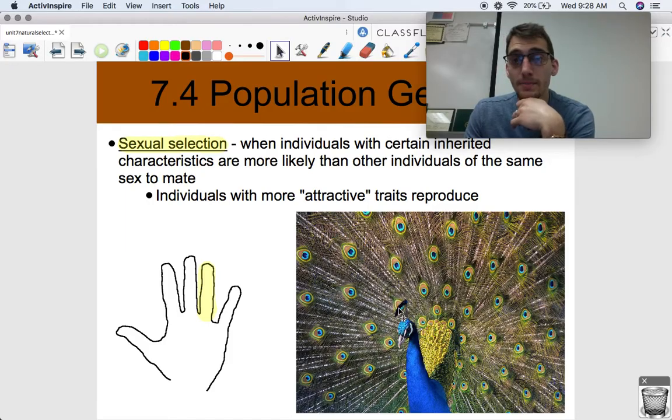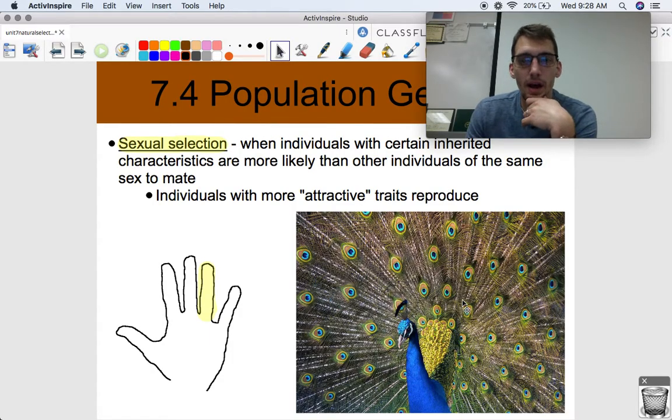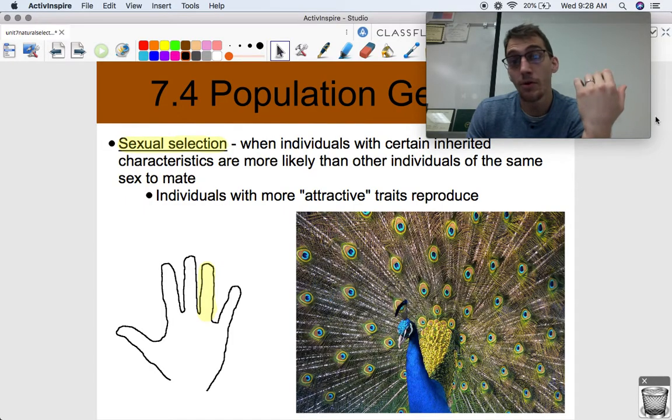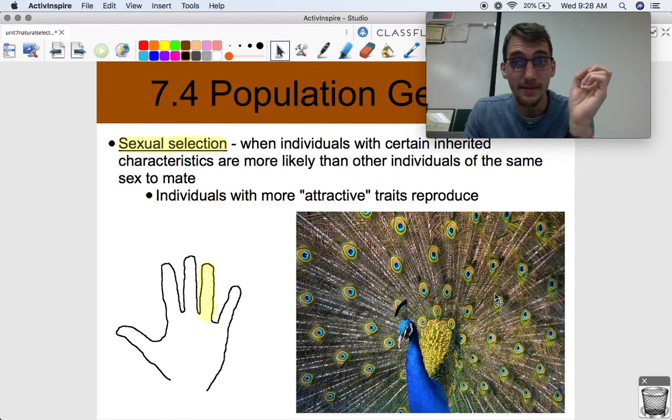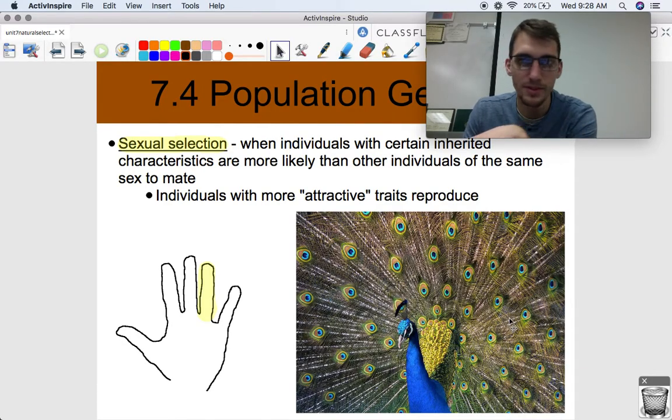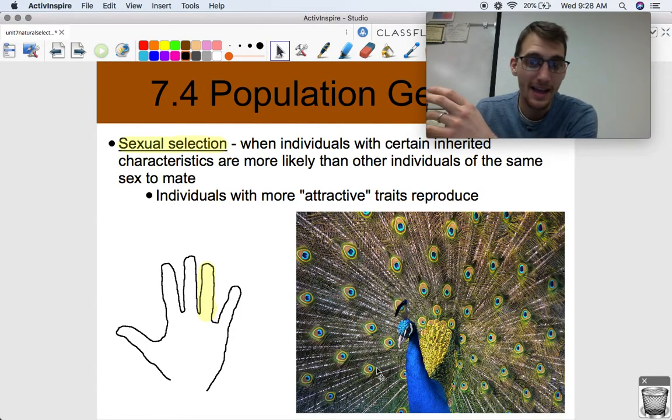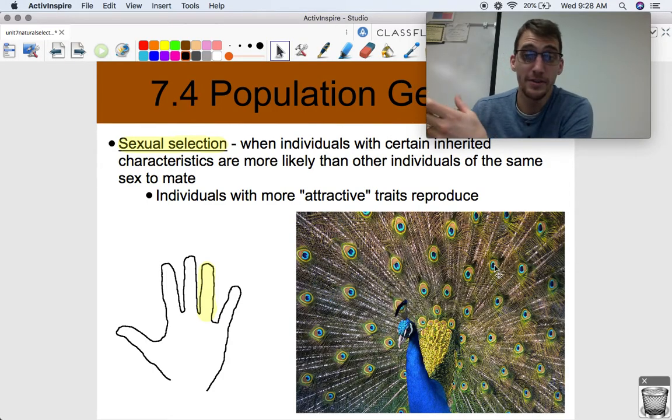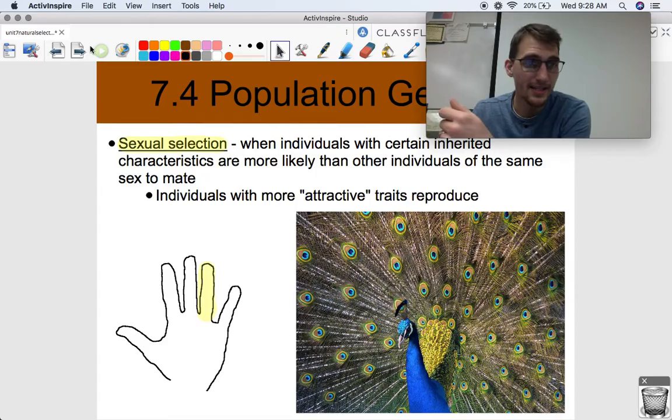Individuals with more attractive traits that make them more likely to mate are going to reproduce. Like this peacock. Peacocks made Darwin pretty upset because for a while he really didn't understand why would a peacock have these ginormous feathers that make it hard for it to run and it can't even fly more than 20 feet. Why would it ever have that? It doesn't help its survival. It helps its reproduction. This guy over here with these beautiful feathers is going to be more likely to reproduce and find multiple females to mate with. That's what peacocks do. One male peacock is going to mate with like 10 female peacocks. Whoever has the best feathers, whoever is the most attractive, is going to be more likely to pass down their traits. That's sexual selection.